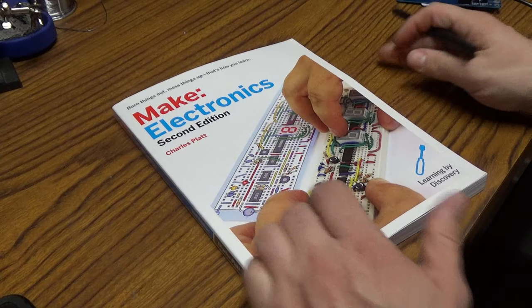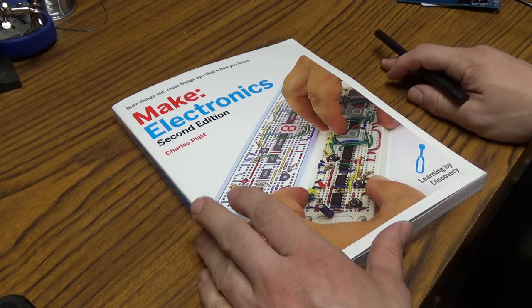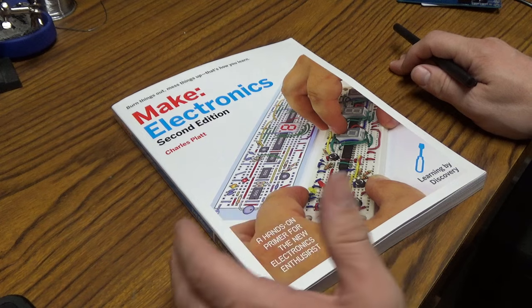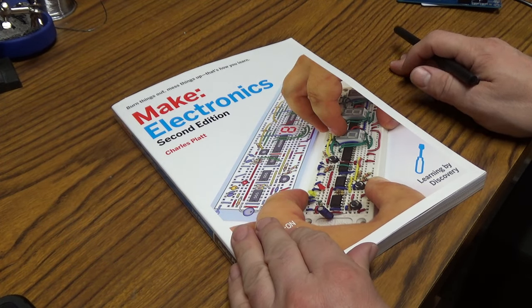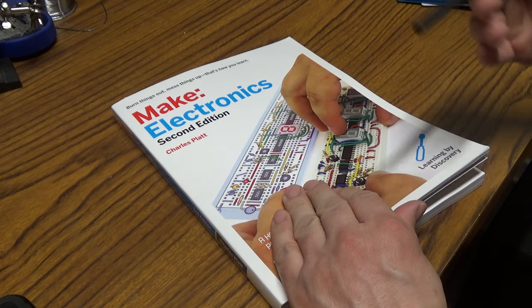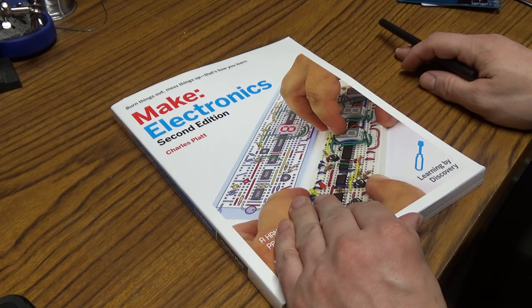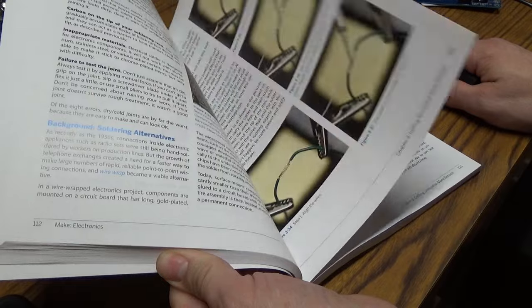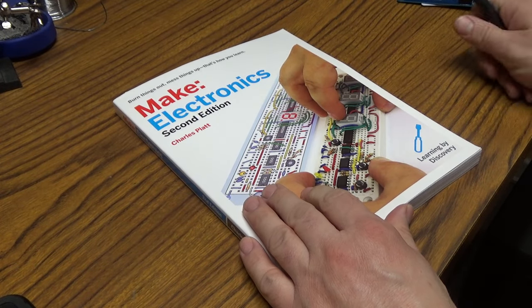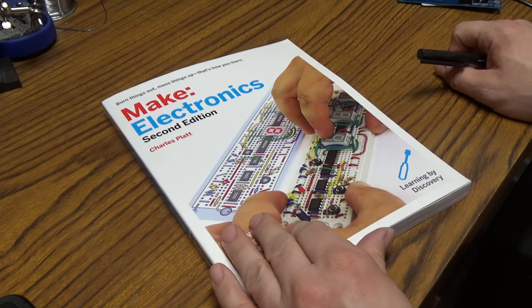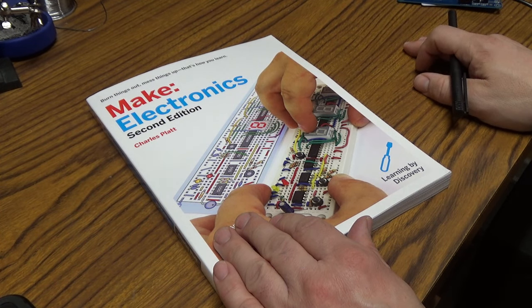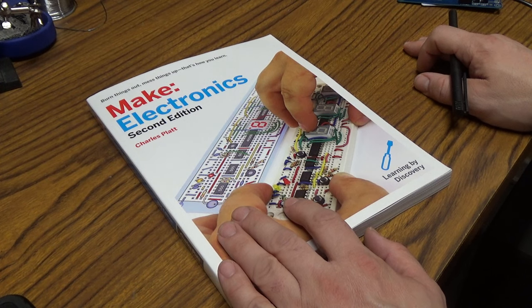Now this book is from Make Magazine Publishing and it's written by Charles Platt. It's the second edition and from what I've read it is kind of a rewrite from the first edition. And they've kind of improved a lot of the illustrations as well as cleaned up some of the examples.